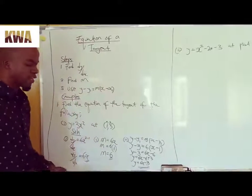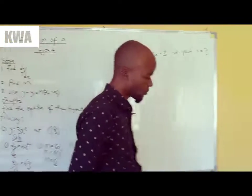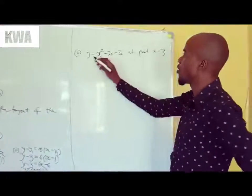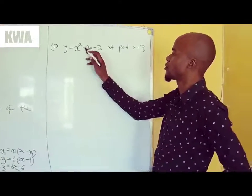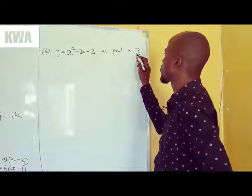So if you are not clear, just pause the video and go through. So now we are looking at the last example. We have y equals x squared minus 2x minus 3 at point x equals 3.